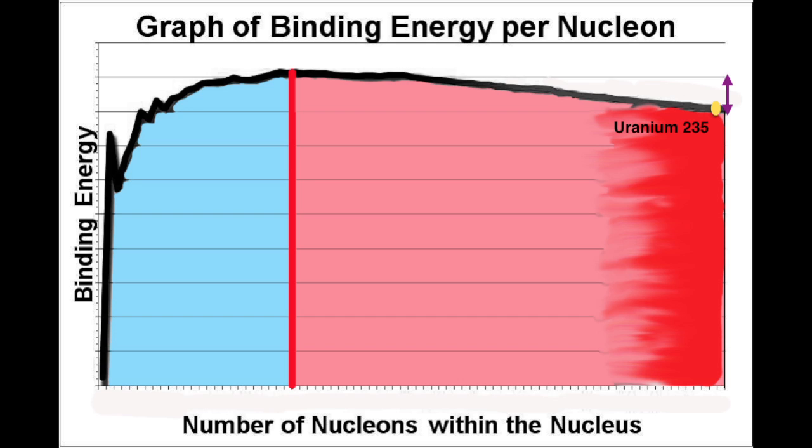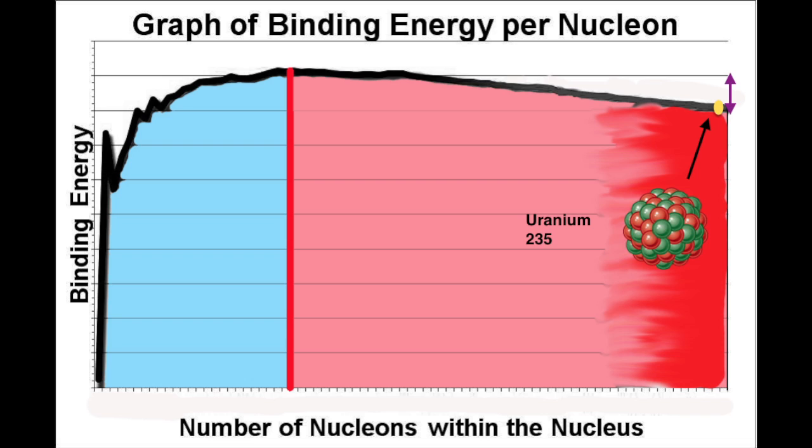Uranium-235 is of special interest because it is the most common material used in nuclear reactors. A neutron moving at just the right speed can split it in two, not quite two equal parts, but into two large parts, and at the same time produces a large amount of energy.